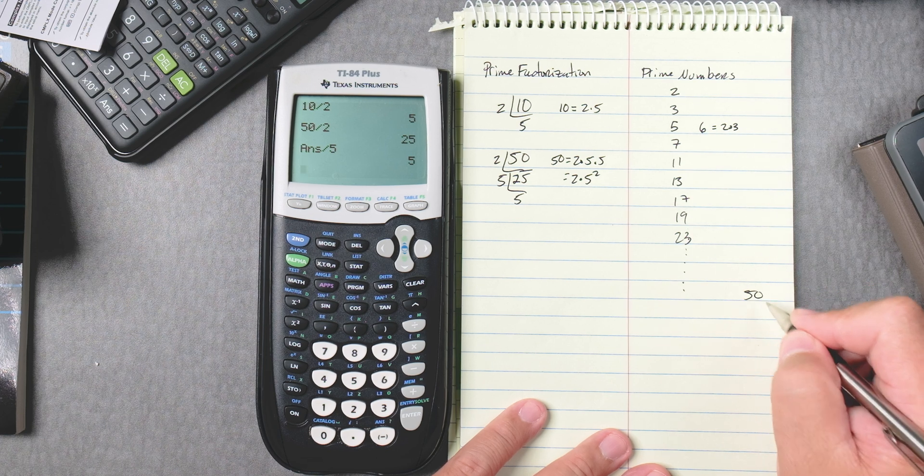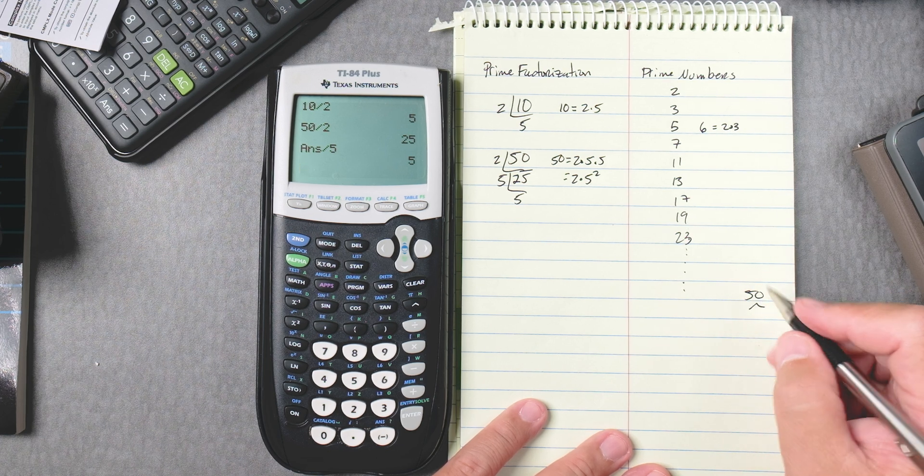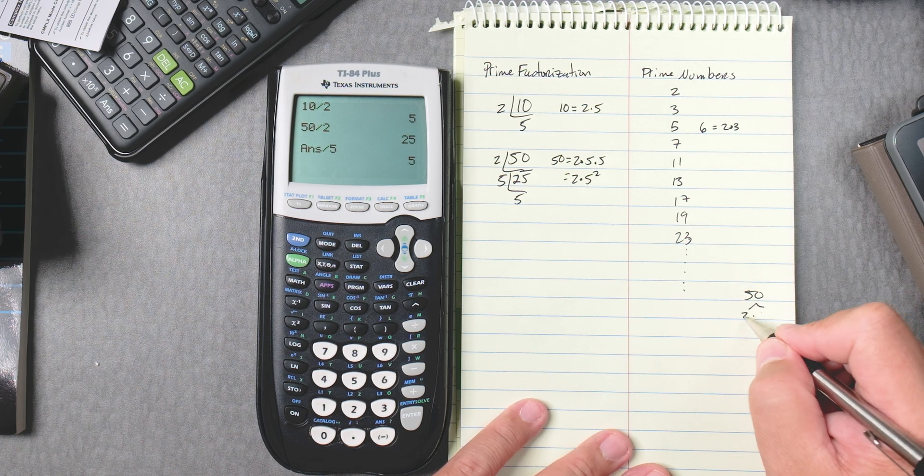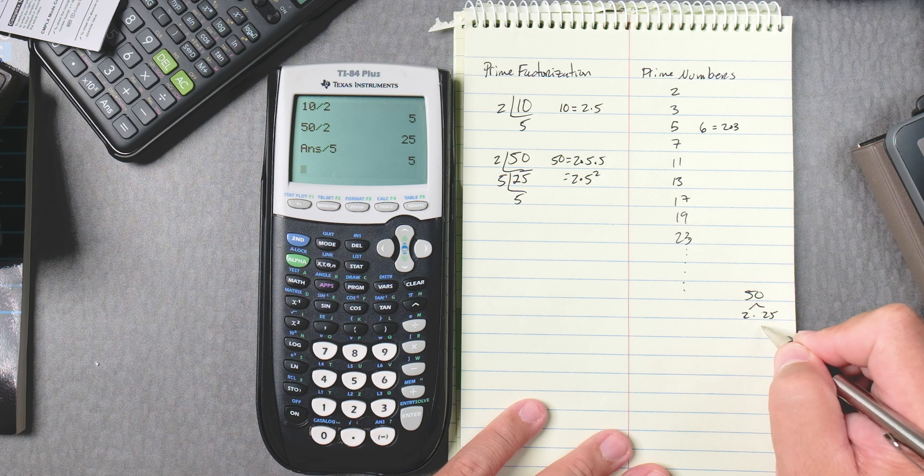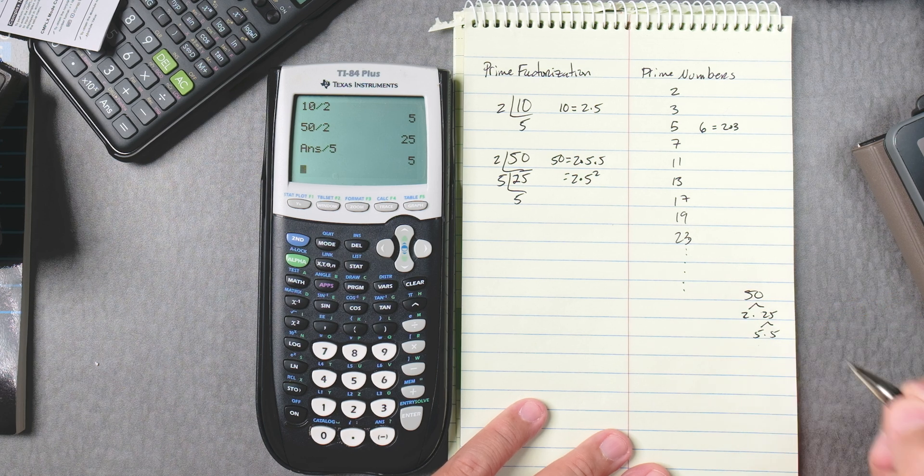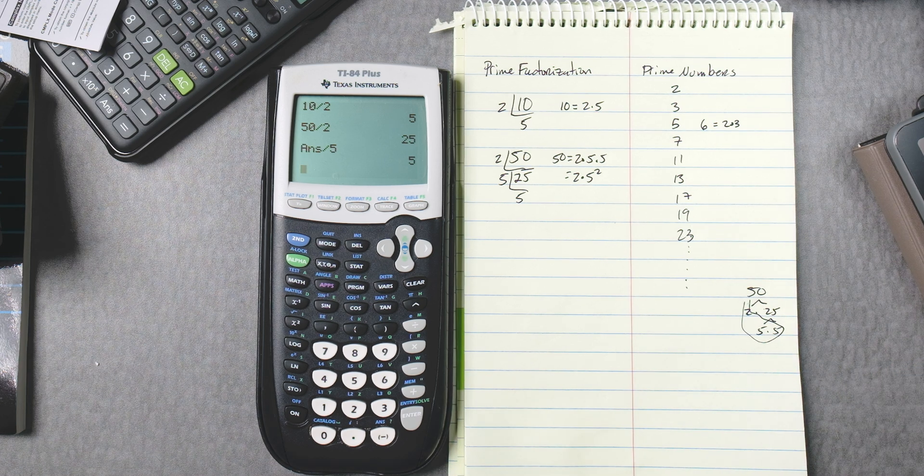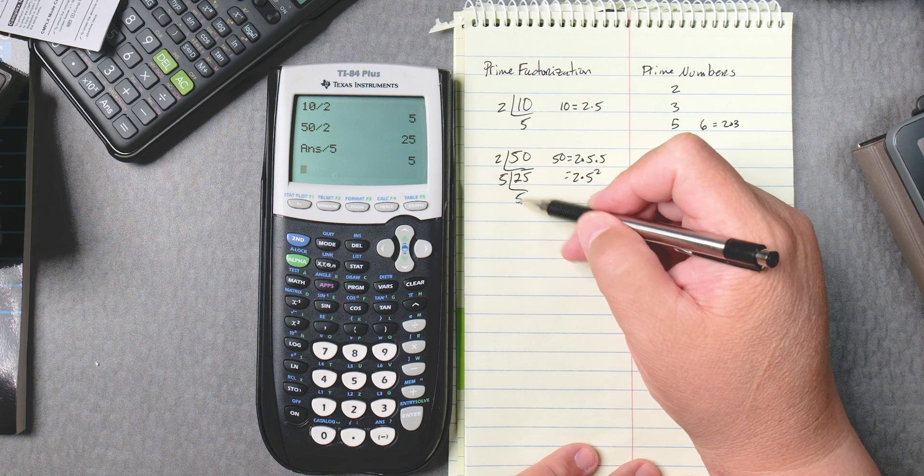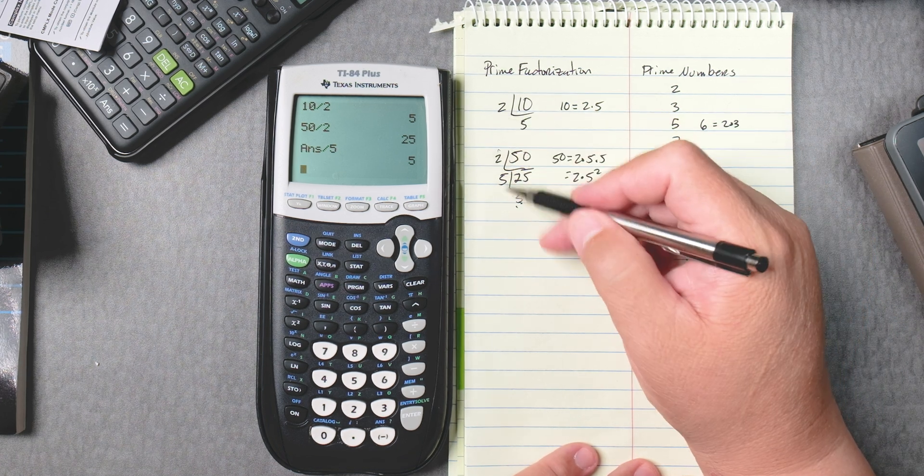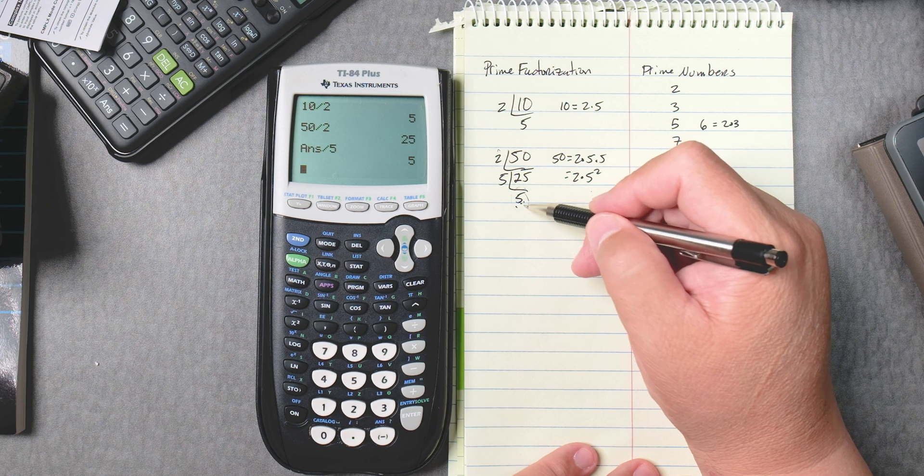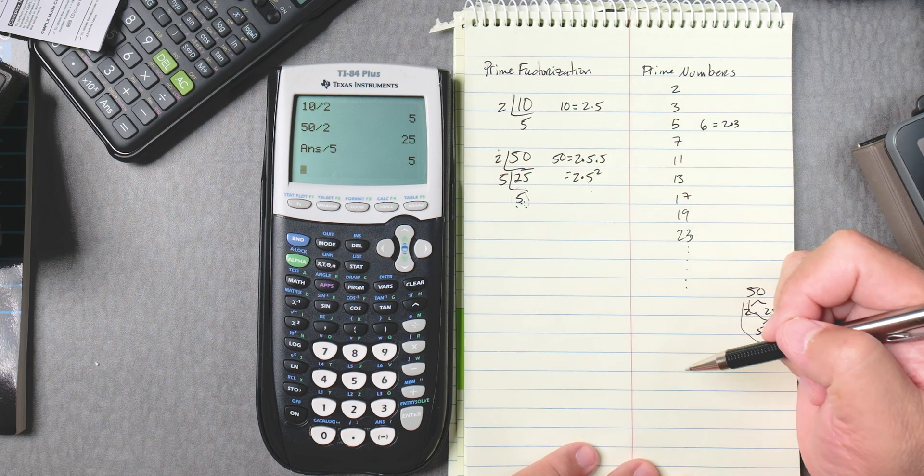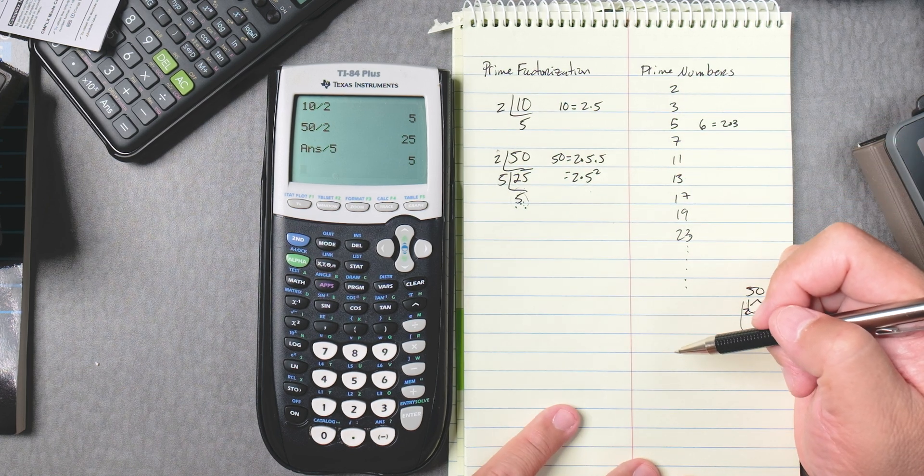Your teacher might do it as a tree. 50: 2 goes into 50, 25 times. Then this is broken down into 5 times 5, and then you circle your prime numbers. I don't like the tree. I like this method with the brackets because I can see the numbers outside. Those are the ones I'm going to use. Also, the last number that comes out should be prime.